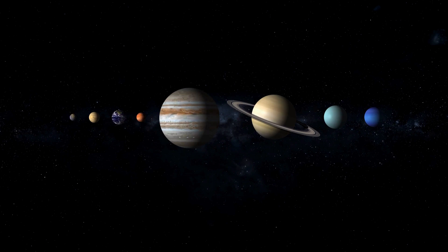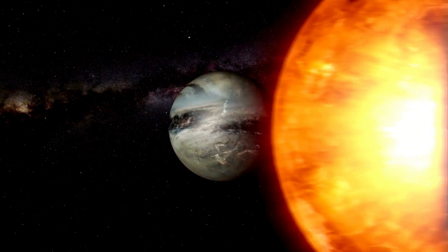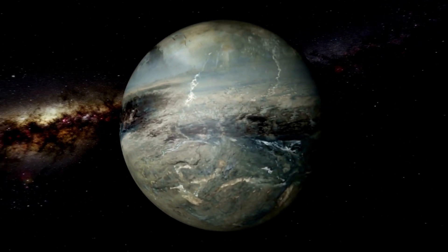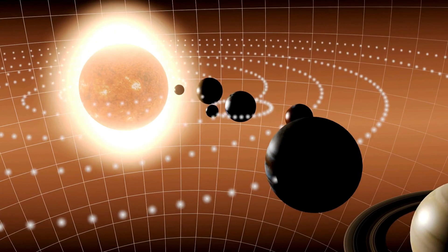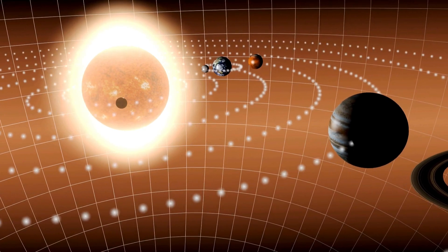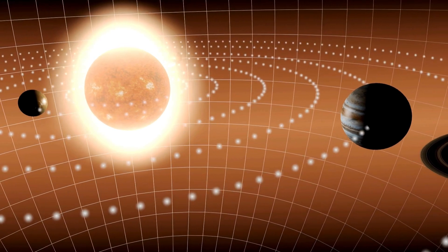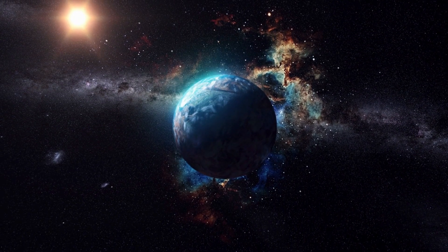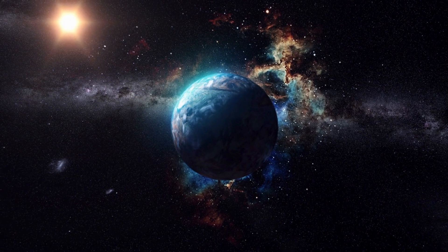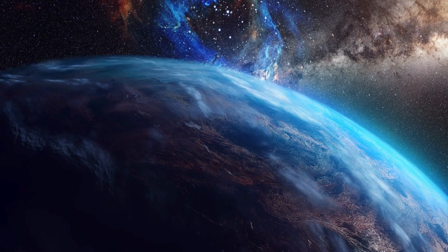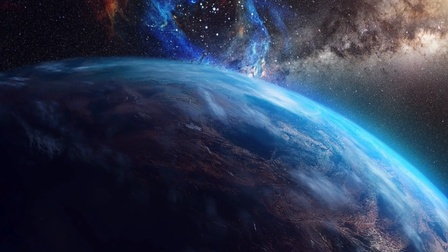Pluto's journey around the Sun is marked by its unparalleled characteristics within our solar system. Its orbit spans an extensive 248 years, and since its discovery in 1930, Pluto has yet to complete a full revolution. Adding to its intrigue is the highly elliptical shape of its orbit, a departure from the nearly circular orbits of the major planets. Additionally, Pluto's orbit is inclined at 17 degrees to the ecliptic plane, making its path steeper compared to other planets.